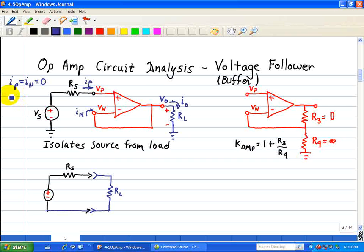We also note that VP is equal to VN, and that's a result of infinite gain due to the op-amp.